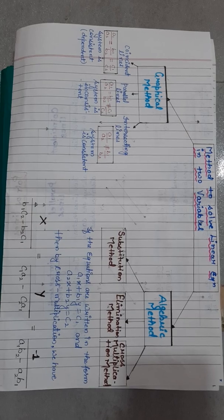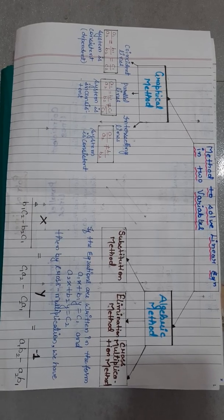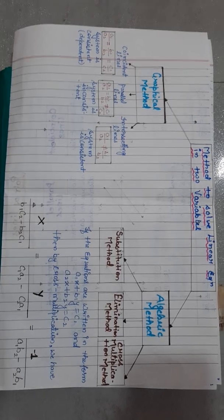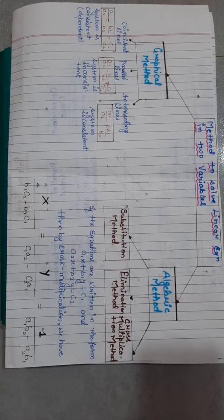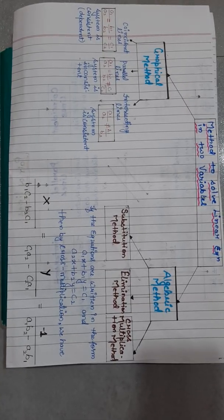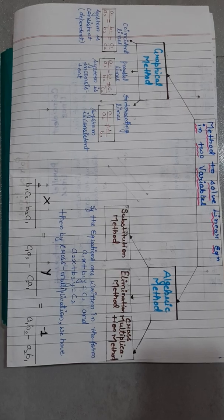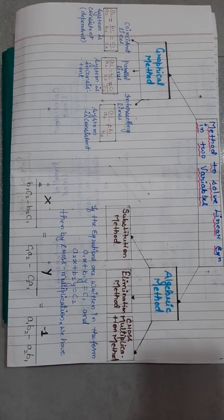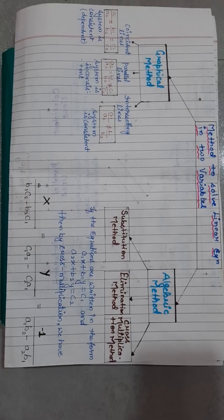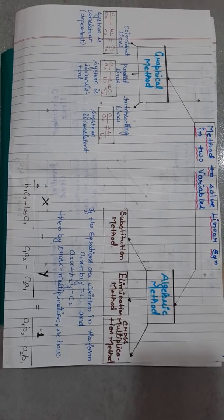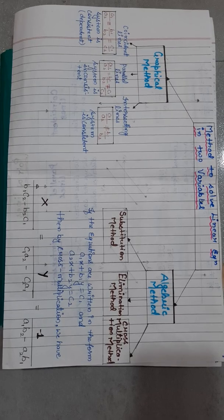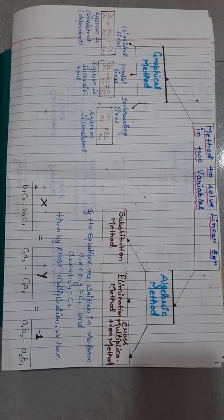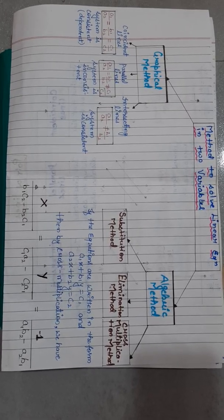In the cross multiplication method, there are also three possibilities: if the system has a unique solution, if the system has no solution, or if the system has infinite solutions. We apply the cross multiplication formula for these cases.